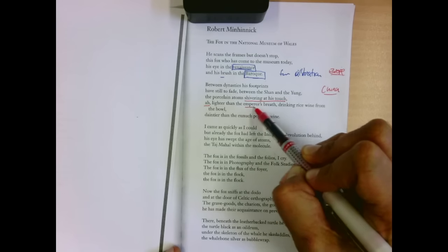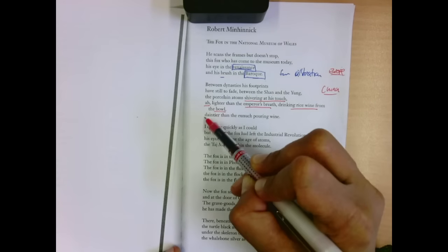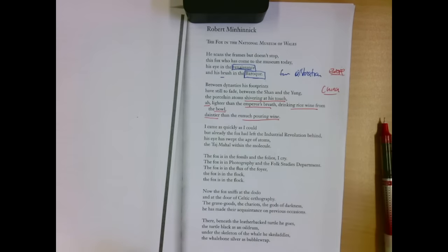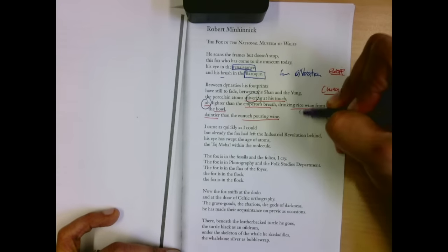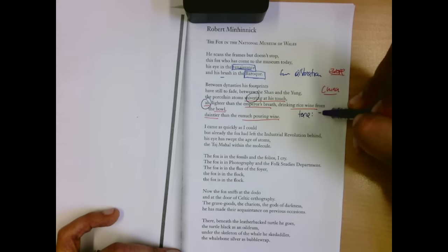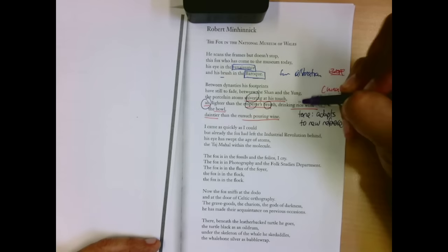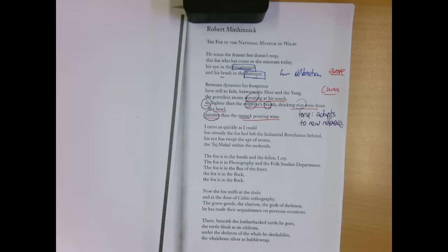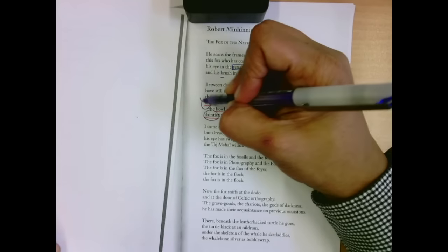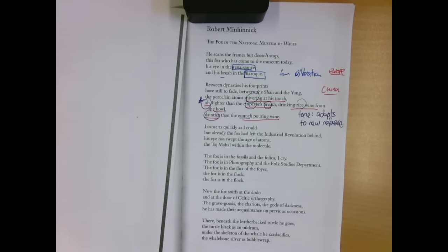Lighter than the emperor's breath, drinking rice wine from the bowl, daintier than the eunuch pouring wine. He not only enters China, but it's the language, he changes tone, the poet. He adapts to the new references. So here we are in the poetic world of China with the emperor's breath, rice wine, dainty eunuchs pouring wine. That's the signal for me that we're in a poetic, different register.